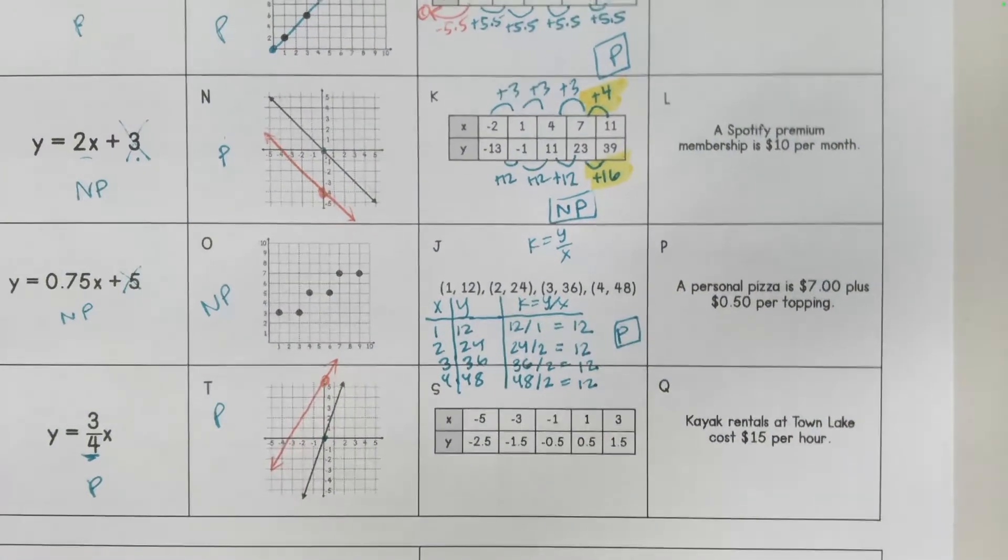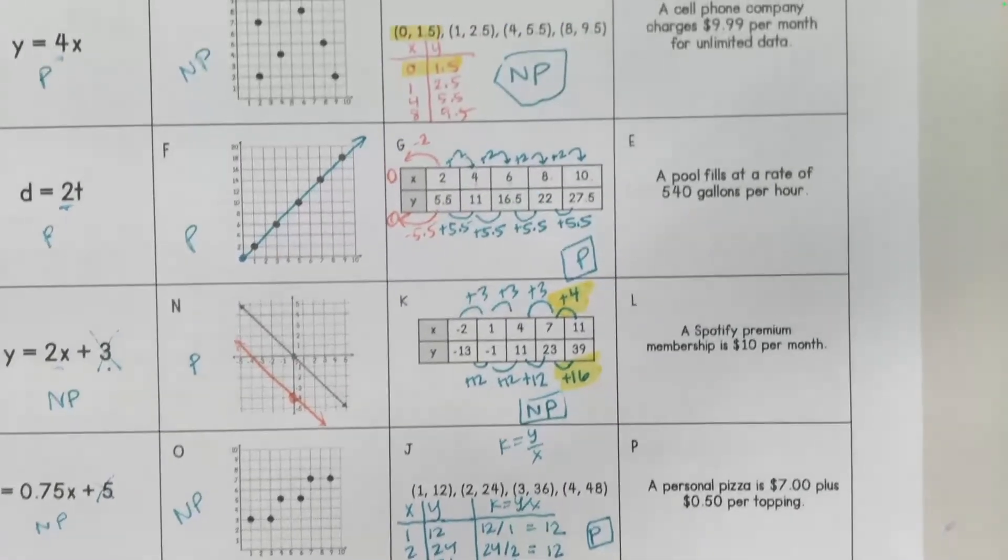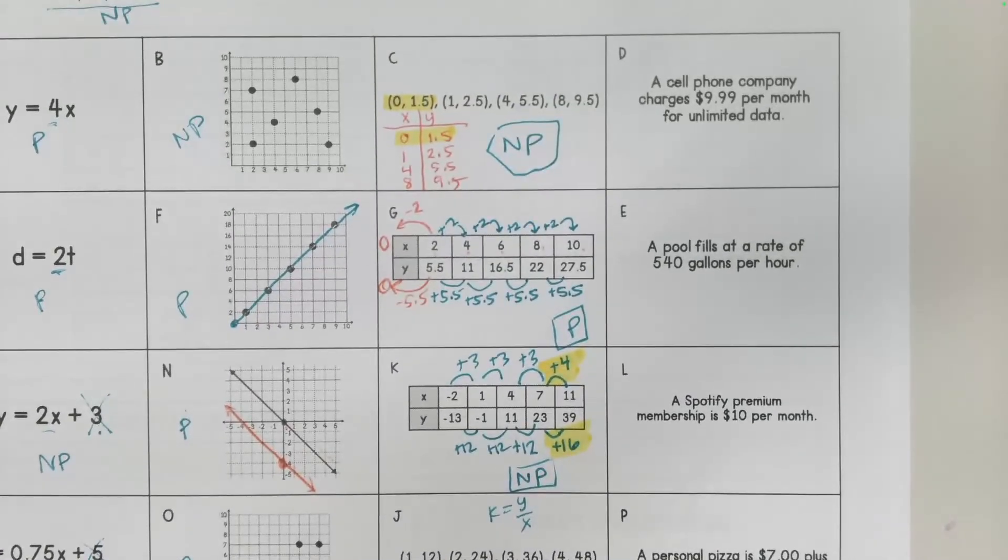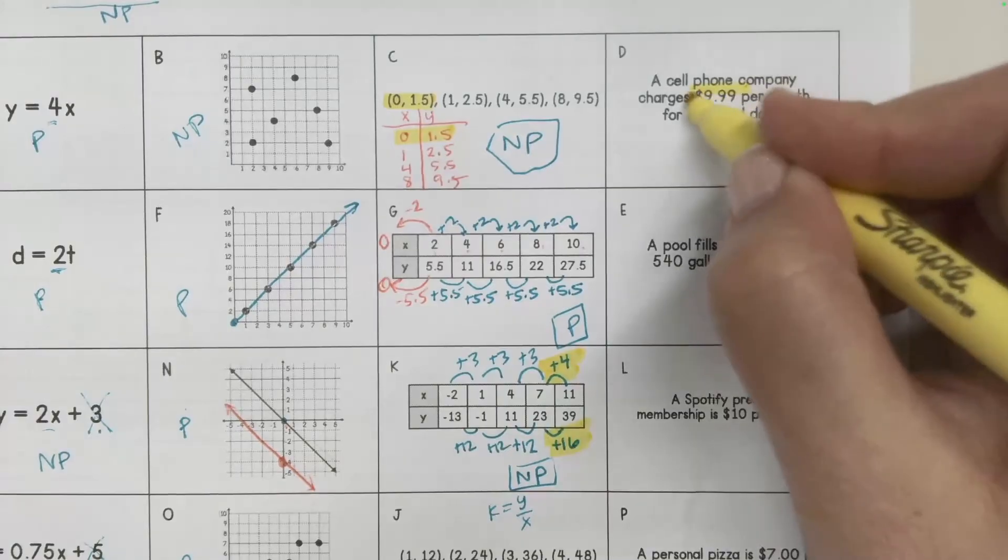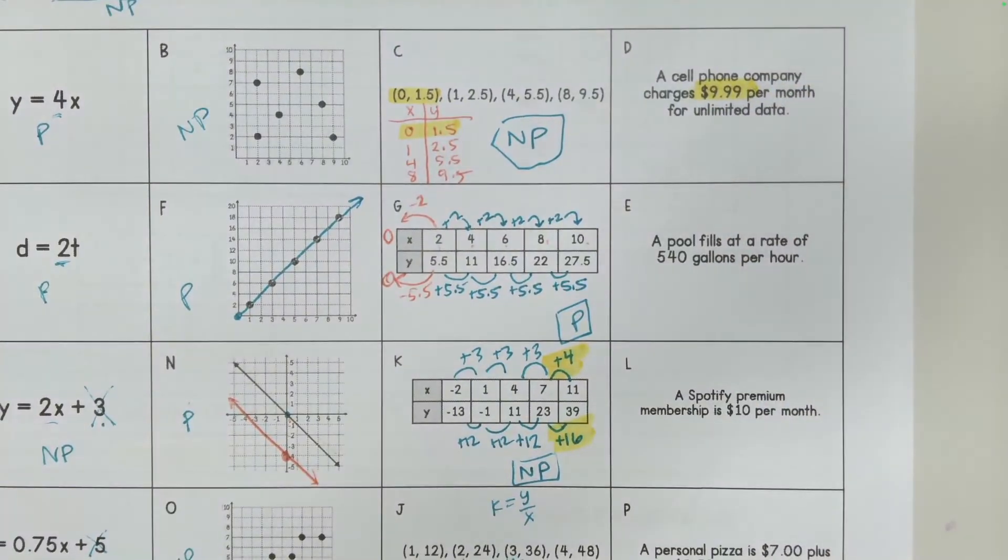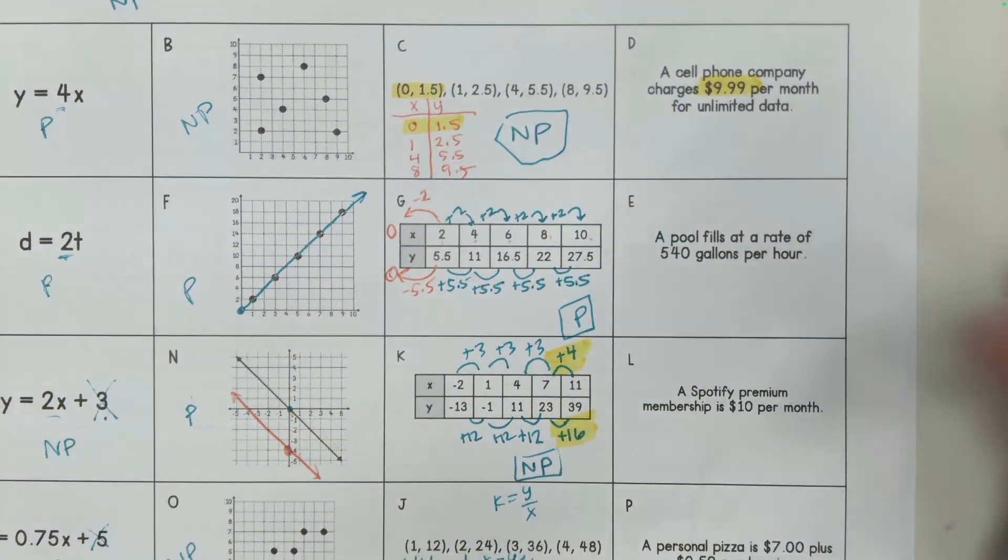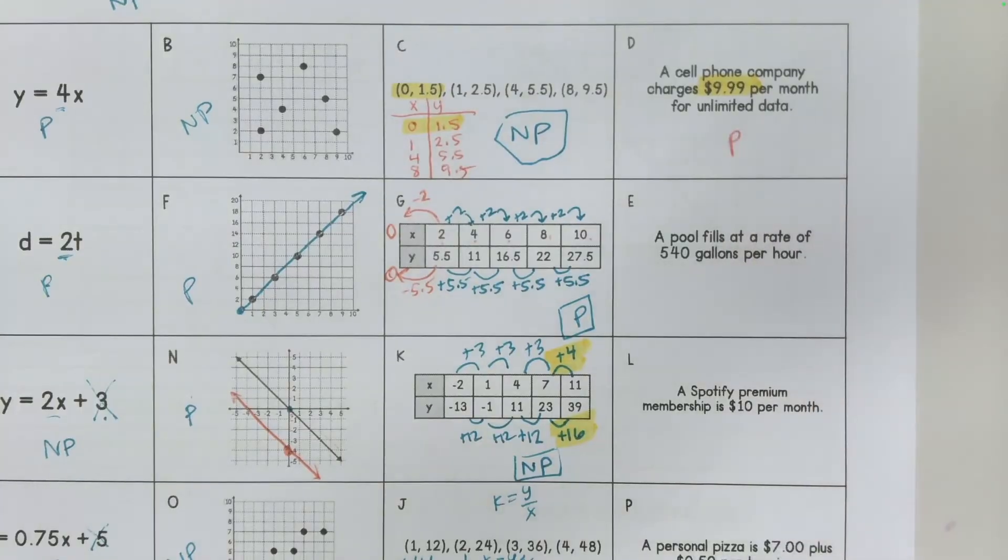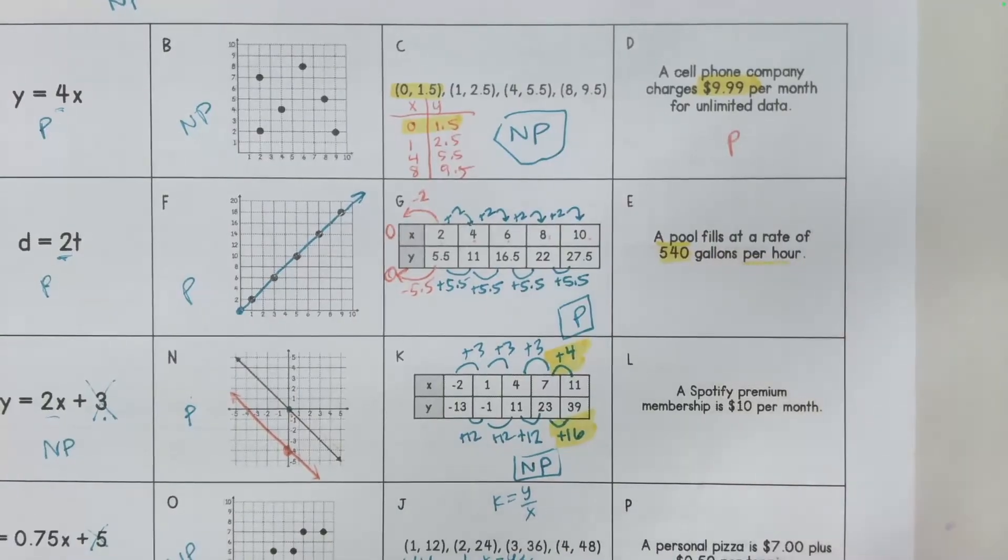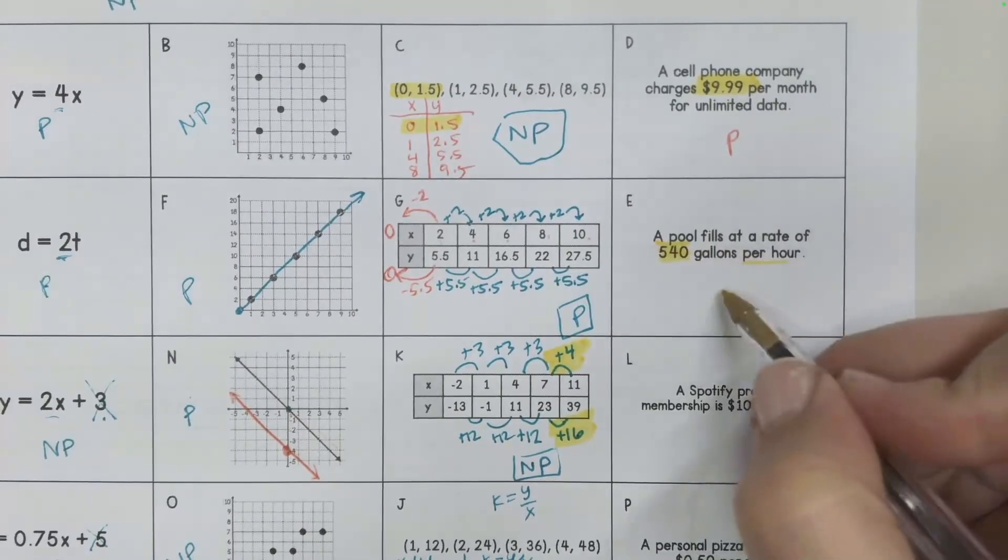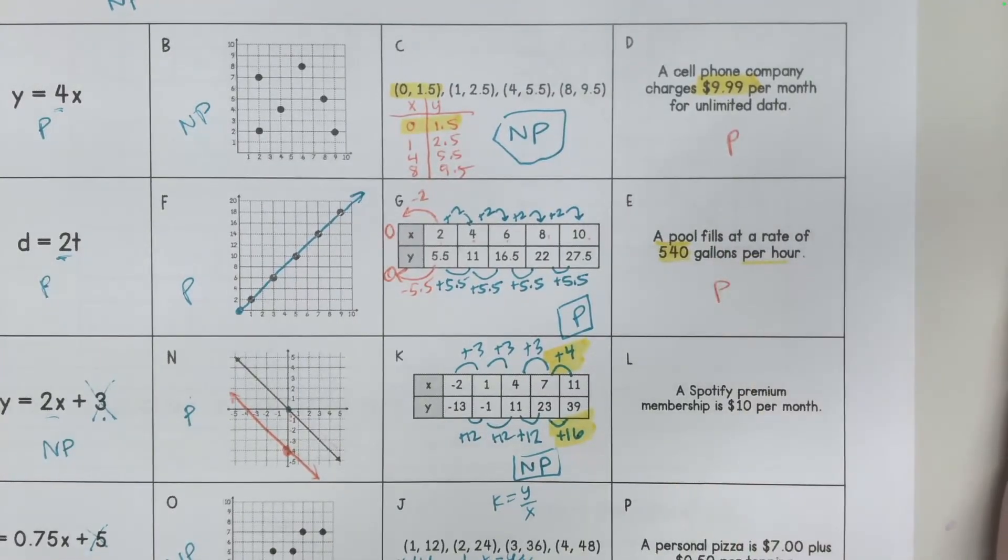All right, so for time, I'm going to pause on that and just take a look at these word problems real quick so that you can see how easy it is to identify something that's proportional. A cell phone company charges $9.99 per month for unlimited data. There is no initial value here. So this is proportional. A pool fills at a rate of 540 gallons per hour. This is proportional. There's no initial value. It's starting at zero.